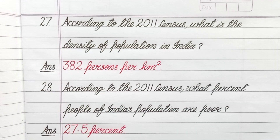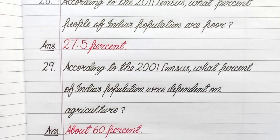Question number 28. According to the 2011 census, what percent of India's population are poor? Answer: 27.5%. Question number 29. According to the 2001 census, what percent of India's population were dependent on agriculture? Answer: about 60%.